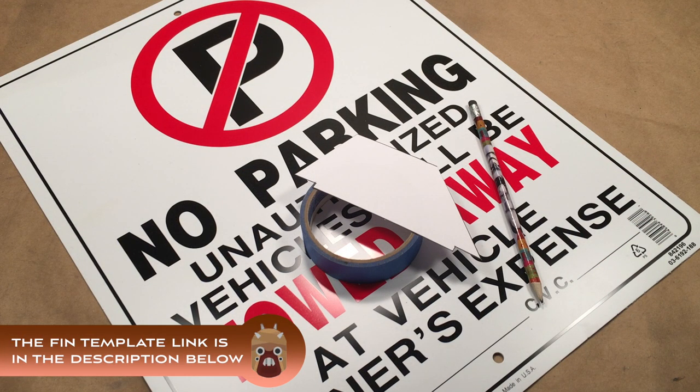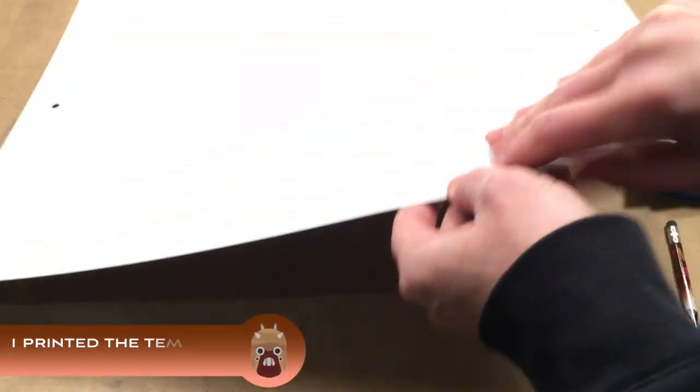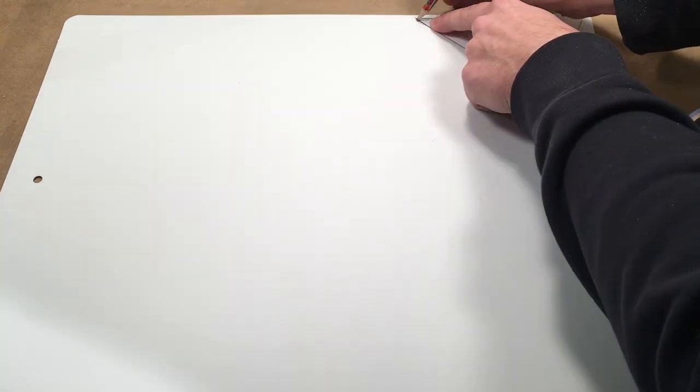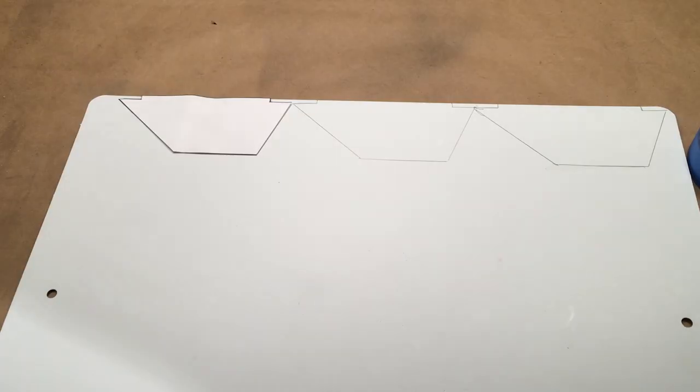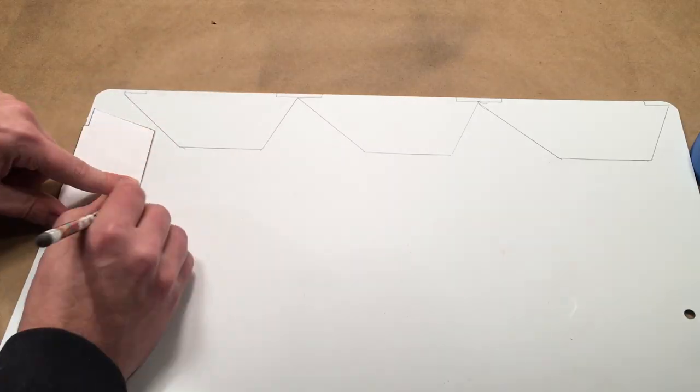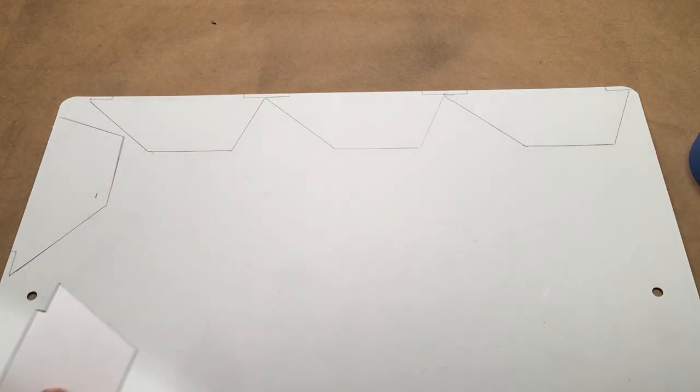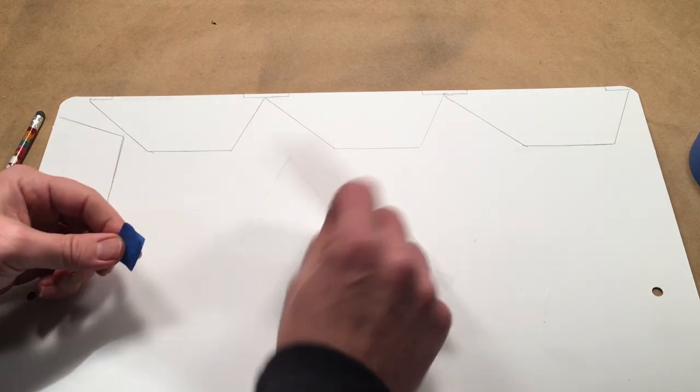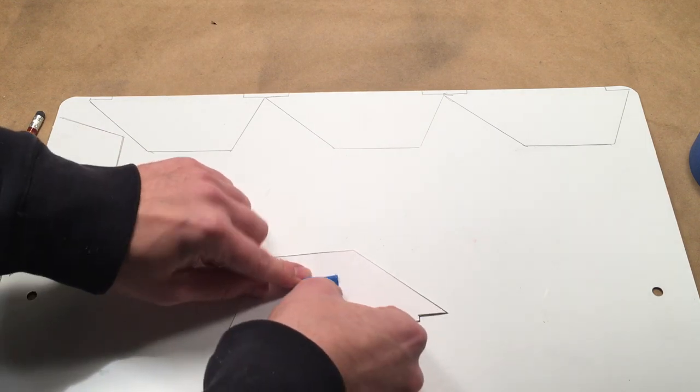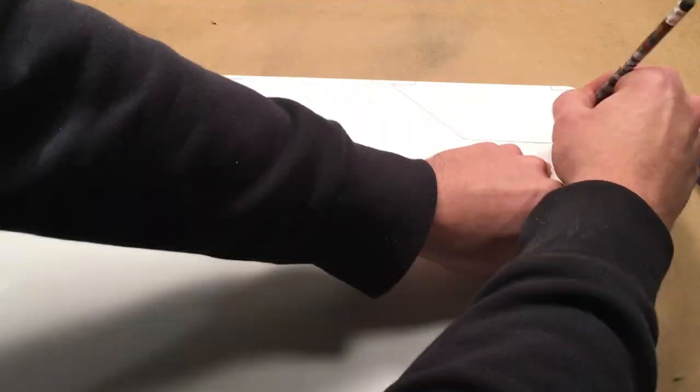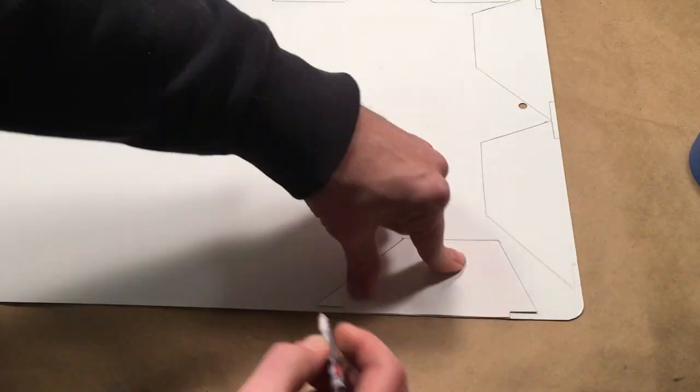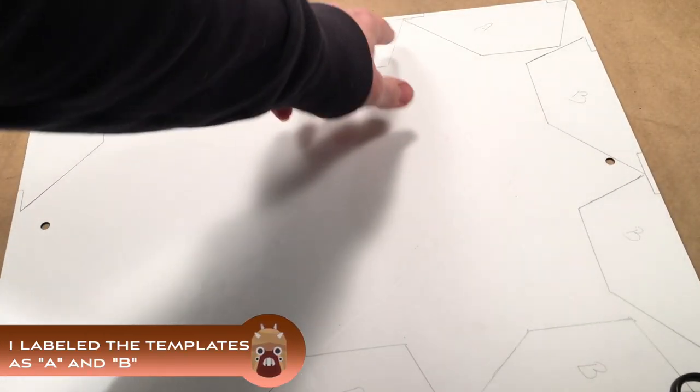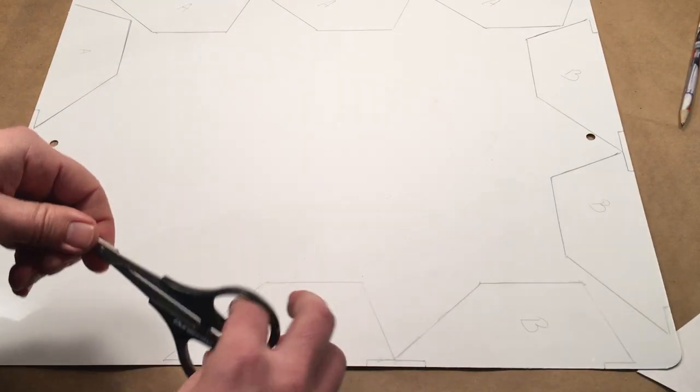Next, print out the fin template, grab some tape, a pencil, and your plastic sign. Draw four fin templates on the back of the sign. Flip the template over and draw four more fin templates. Cut all eight of the templates out using Lexan scissors.